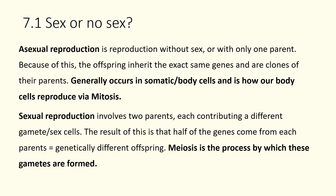It's how our body cells reproduce through the process of mitosis. When you have skin cells that are dying, you can make new skin cells via mitosis. Sexual reproduction is our other form of reproduction, and that involves two parents having some sort of sexual fertilization event. It includes two different sex cells, or gametes, from two different parents, which means that half of the genes of the offspring come from each parent. That means the offspring are going to be genetically different. The process of creating these sex cells that only have half the amount of DNA is known as meiosis, and that's the main thing we're going to be focusing on throughout this topic.